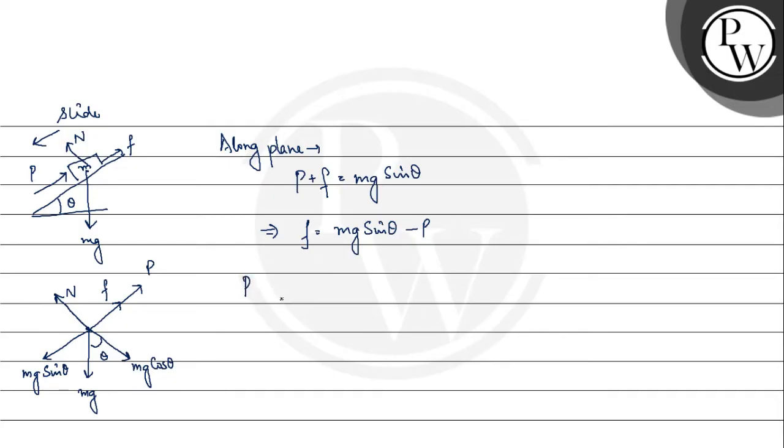We are told that P varies from P1 to P2. For P1, we are told that it is Mg sine theta minus mu Mg cos theta. And P2 is Mg sine theta plus mu Mg cos theta. Therefore, if we put these values in the equation, then our F changes from plus mu Mg cos theta to minus mu Mg cos theta.